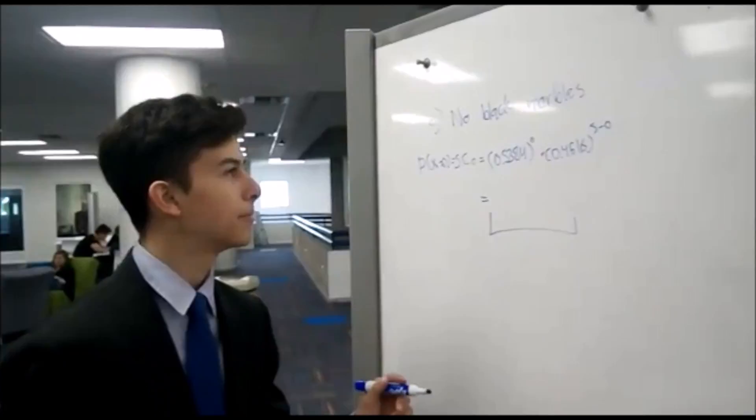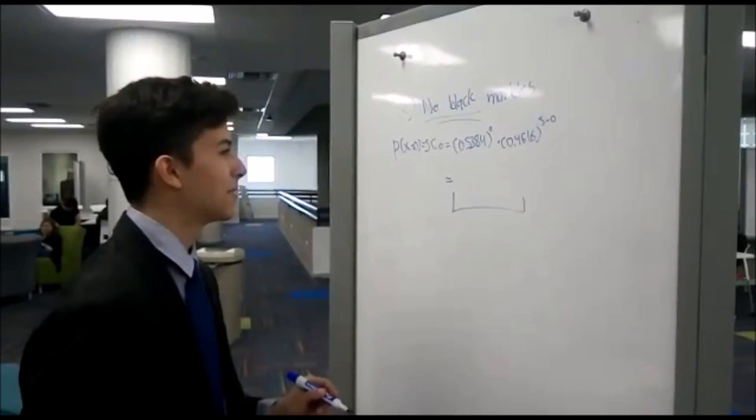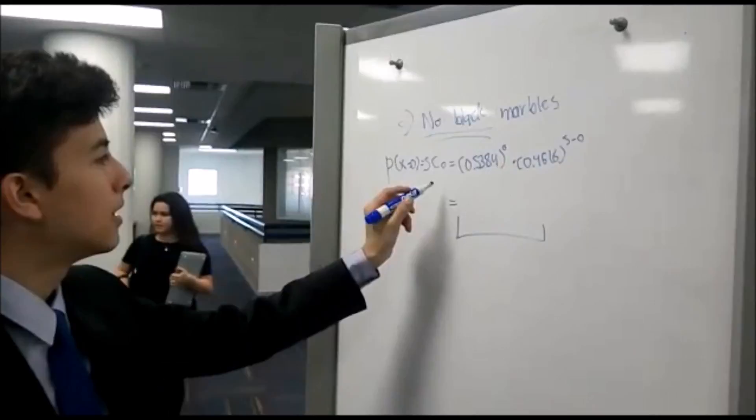So for problem C, now we want no black marbles. So in this case, there are no black marbles. We're just going to do the probability for 0, because there will be no marbles. So the answer for this problem, you see that we substitute the value of x, which is 0.